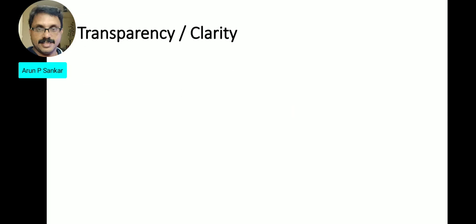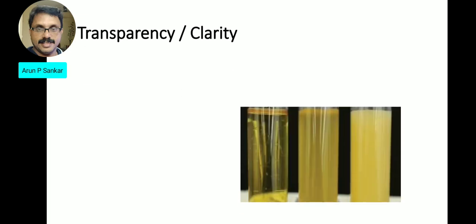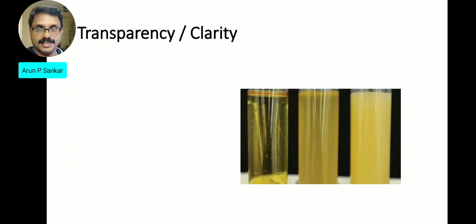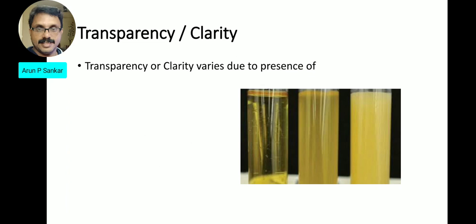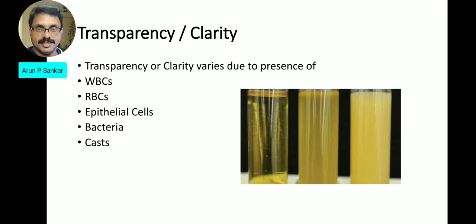Coming to transparency or clarity of the urine. Normally urine will be clear. Turbidity may be due to WBCs, RBCs, epithelial cells, bacteria, casts, crystals, fat, or sperm.